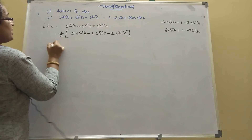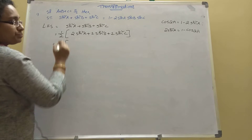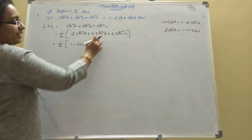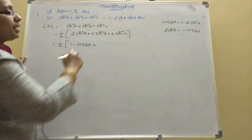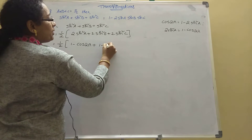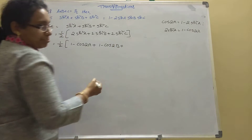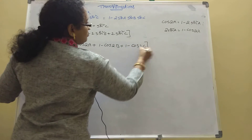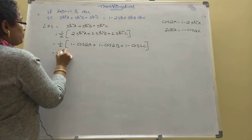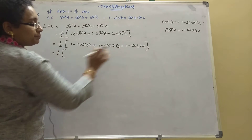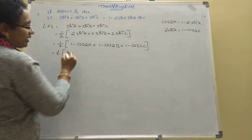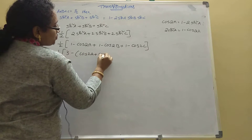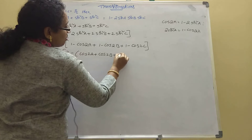So we get 1 by 2 times [(1 minus cos 2A) plus (1 minus cos 2B) plus (1 minus cos 2C)]. How many ones are there? Three. So write 3 minus, then take common: cos 2A plus cos 2B plus cos 2C.